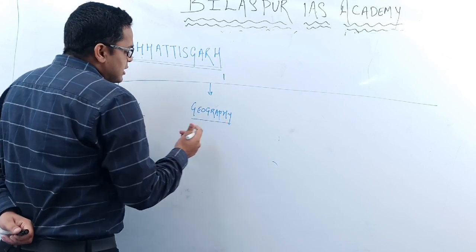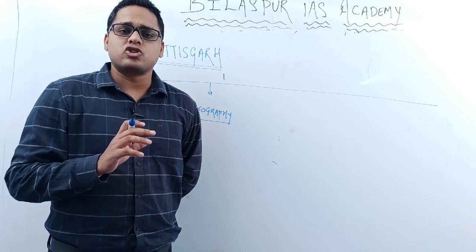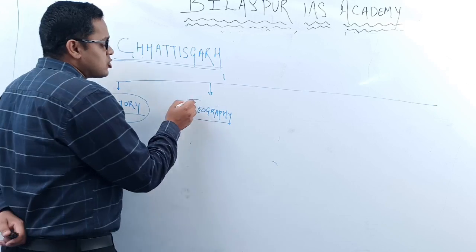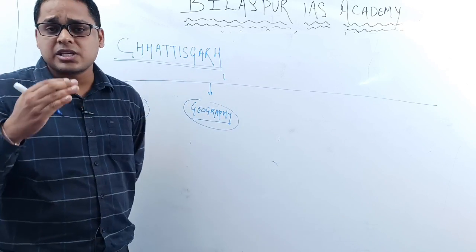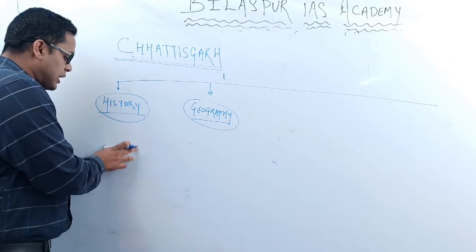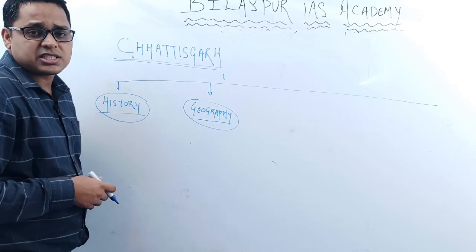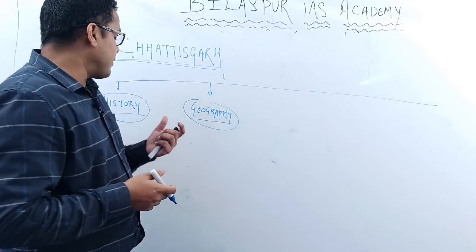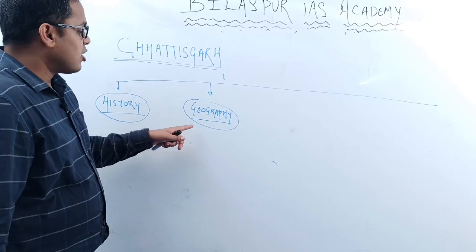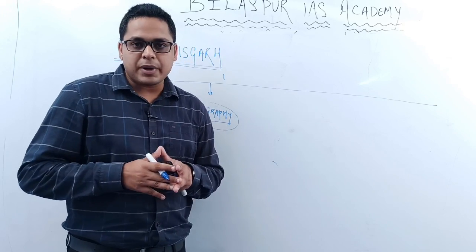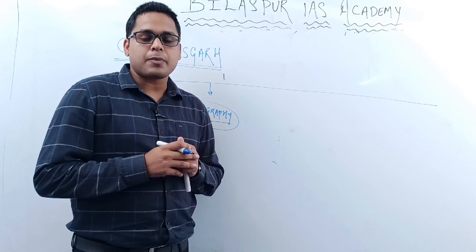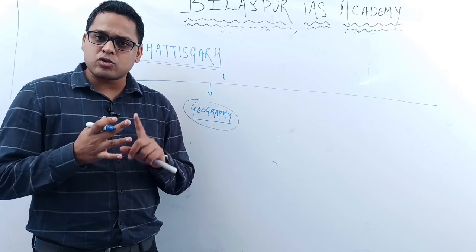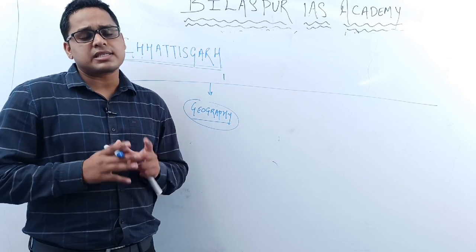Chhattisgarh history and geography remain somewhat similar to Indian history and Indian geography. If you have a good understanding of Indian history and geography, Chhattisgarh's history and geography will become much simpler for you, because the timeline of Indian history remains intact with Chhattisgarh history. You just need to read the contribution of Chhattisgarh in particular historical sections. For geography, most of Chhattisgarh lies in the peninsular plateau, so similar things found in the peninsular plateau — climate, vegetation, agriculture — apply to Chhattisgarh as well.